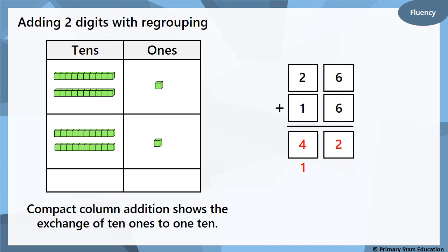So if you have a look at the column addition, you can see that we've done two, which is 20, add one, which is actually 10, which is 30, and then I've remembered to add that extra 10 on at the end, which is 40, and then we've got our two ones. So 26 add 16 is 42.